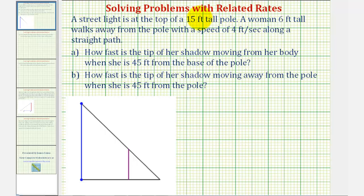Welcome to a second example of a related rates problem that deals with a street light and a shadow. A street light is at the top of a 15-foot tall pole. A woman six feet tall walks away from the pole with a speed of four feet per second along a straight path. How fast is the tip of her shadow moving from her body when she is 45 feet from the base of the pole? And how fast is the tip of her shadow moving away from the pole when she is 45 feet from the pole?